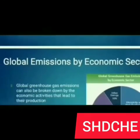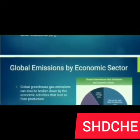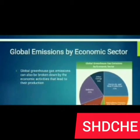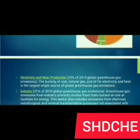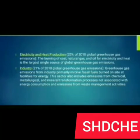Global emissions by economic sector: global greenhouse gas emissions can also be broken down by the economic activities that lead to their production. Electricity and heat production accounts for 25% of 2010 global greenhouse gas emissions. The burning of coal, natural gas, and oil for electricity and heat is the largest single source of global greenhouse gas emissions.